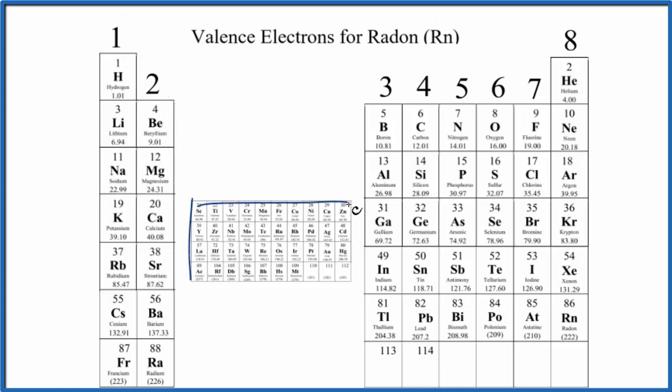We skip over the transition metals here, then in group 13 through 18 we have 3, 4, 5, 6, 7, and 8 valence electrons.